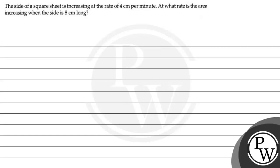Hello, let's first read the question. The question says that the side of a square sheet is increasing at the rate of 4 cm per minute. At what rate is the area increasing when the side is 8 cm long?